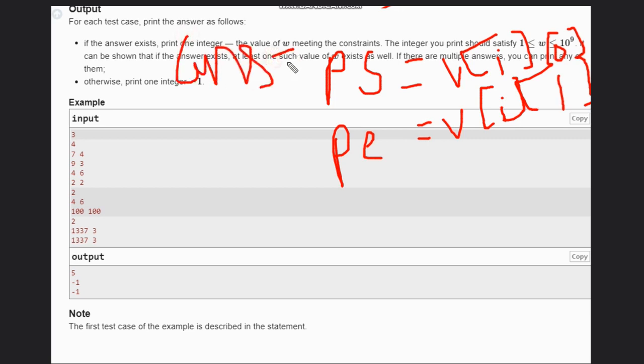Our answer will be initially TS, that is the strength of first person to lift. Then we will make a loop from i equal to 1 to i less than n.